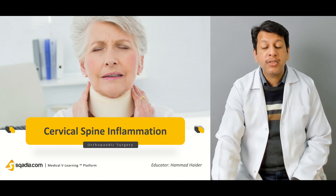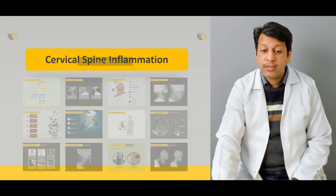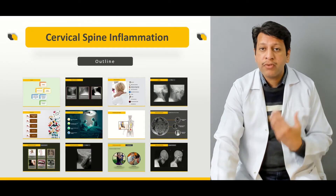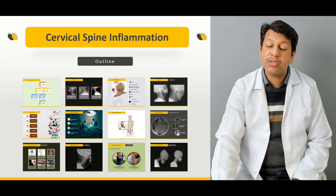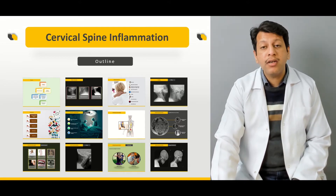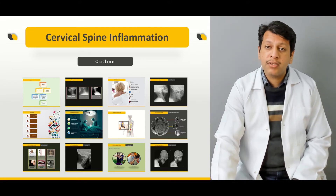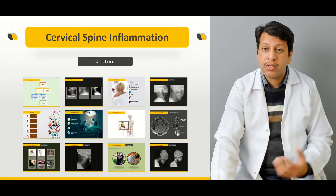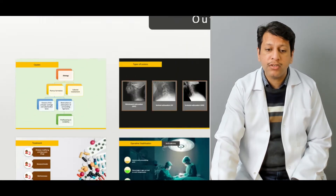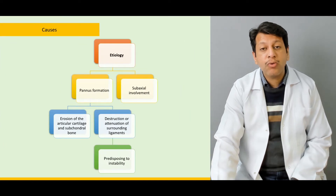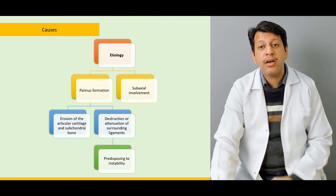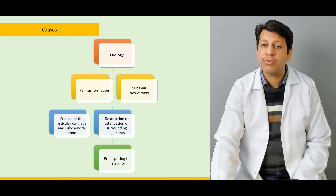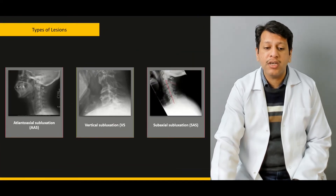We will be discussing the pathophysiology of rheumatoid arthritis — how it causes pannus formation which leads to subaxial subluxation, atlantoaxial subluxation, and basilar invagination. We will briefly discuss the X-ray findings, especially those associated with periarticular osteopenia.